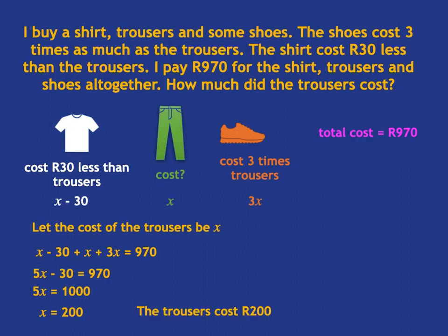Just a few points to notice that will help you with solving word problems in general. Firstly, it is important to spend a little time making a quick summary to make sure you actually understand what the scenario is all about — it's very easy to get lost in all the words. Secondly, be very clear about what you are calling x and actually write it down. This makes it easier for others to follow your solution, and also for you to stay clear about what you're doing. And finally, don't forget that in a word problem we really do want to, at the end, actually answer the word problem properly.